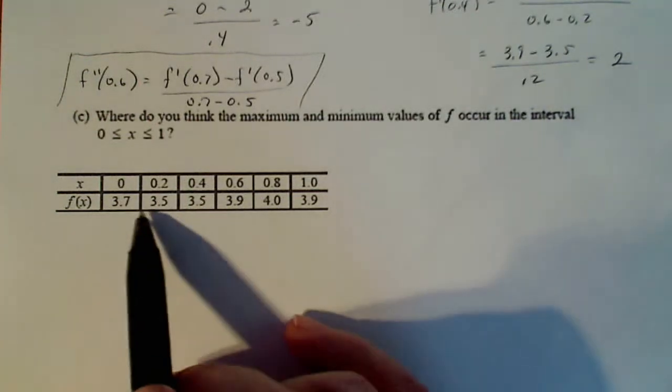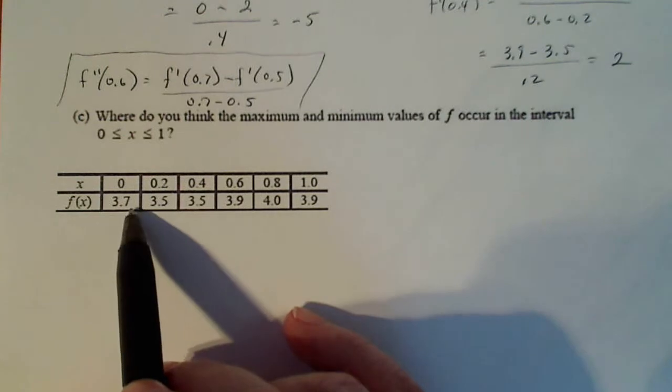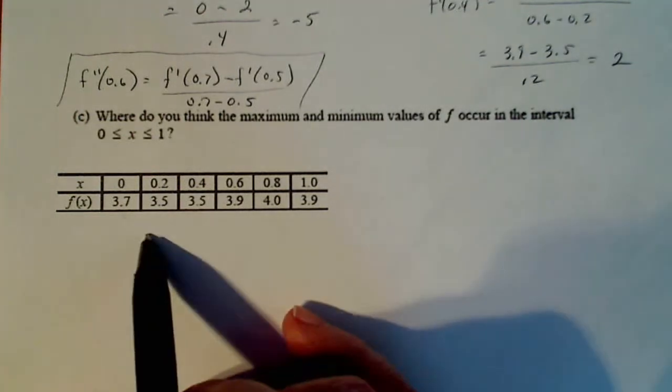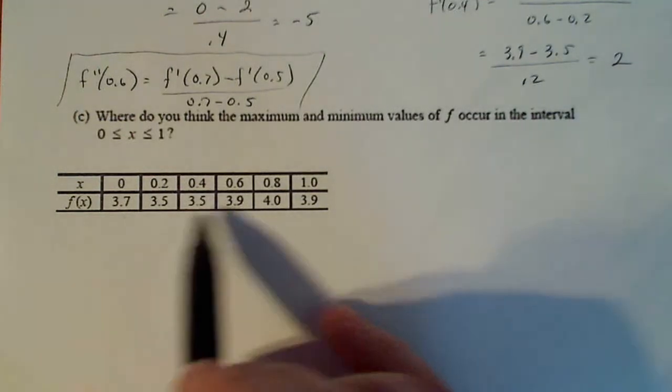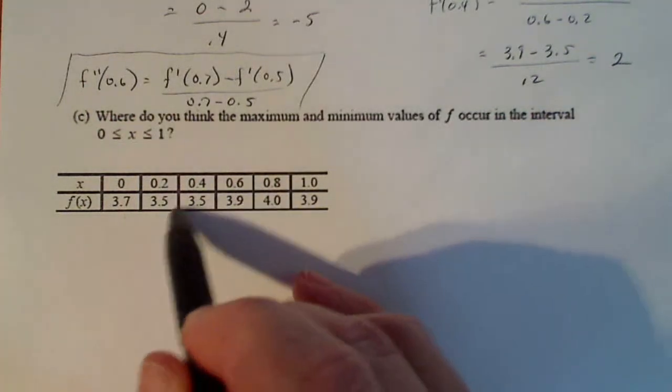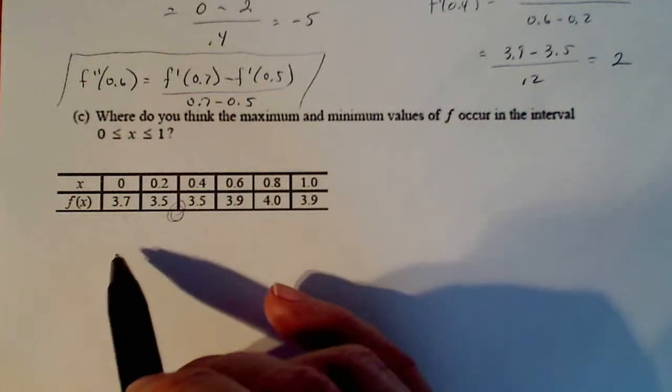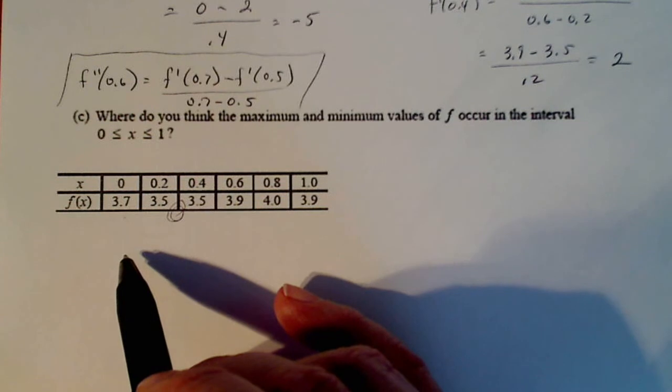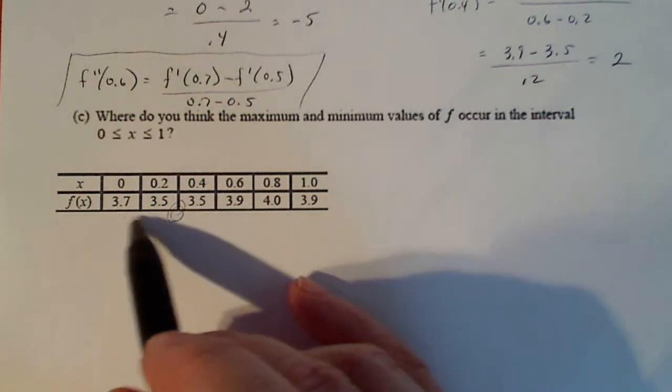So it looks like it goes down to 3.5, I stay level and I go back. A low point could occur between 0.2 and 0.4. Yeah, because it's still staying the same.